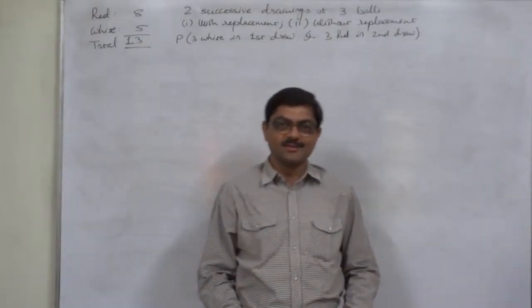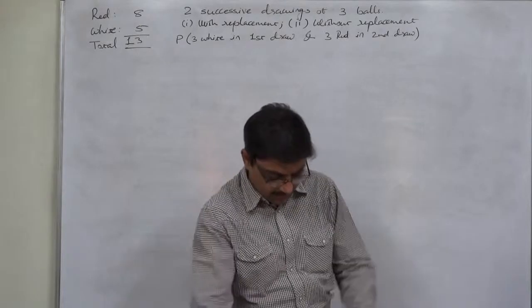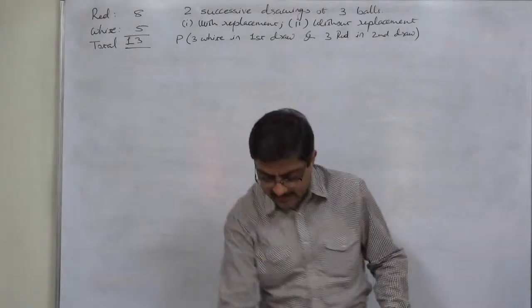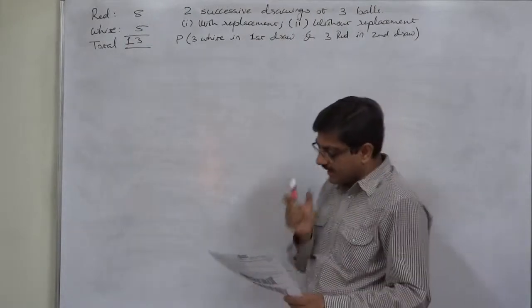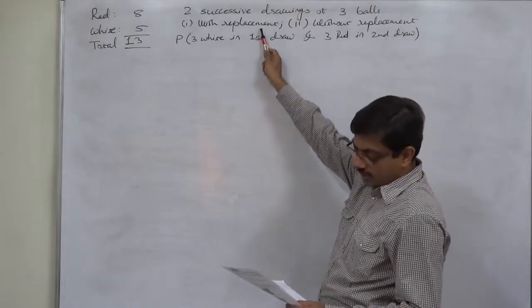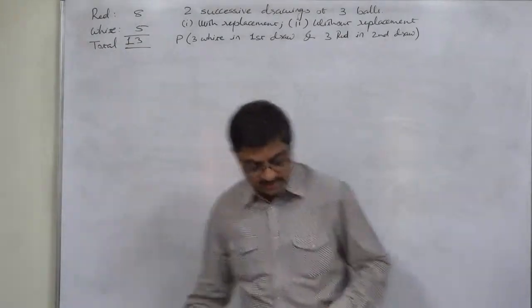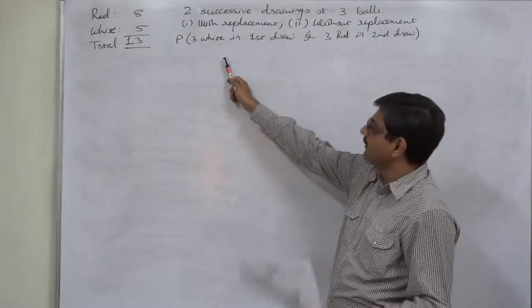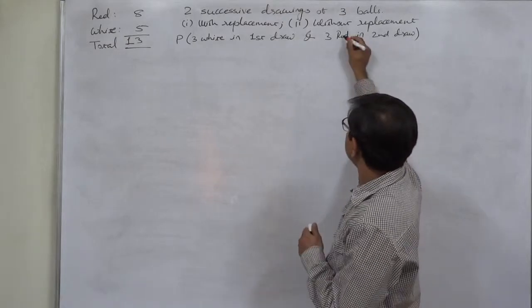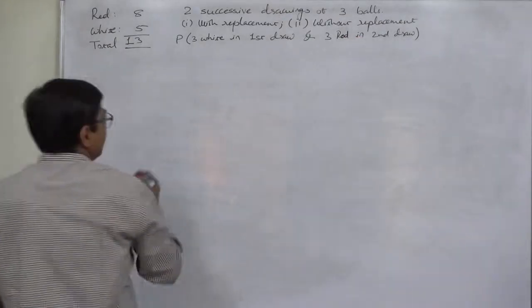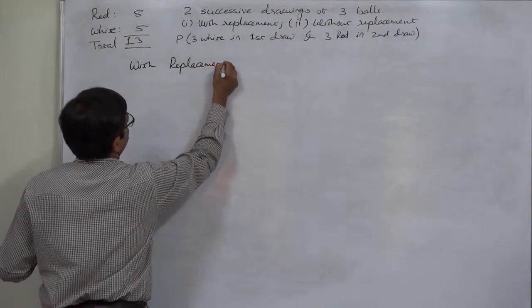Let us study one more case on with replacement and without replacement in the chapter probability. The problem: a bag contains eight red and five white balls, so total there are 13 balls. Two successive drawings of three balls are made — with replacement before the second draw, and without replacement before the second draw. We will solve the problem two times: with replacement and without replacement.